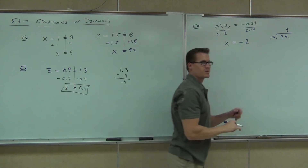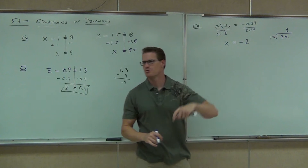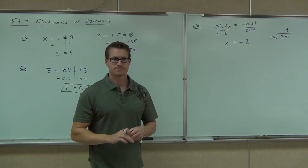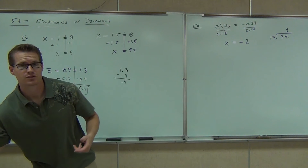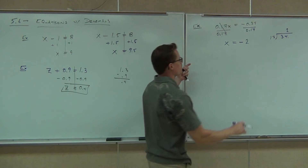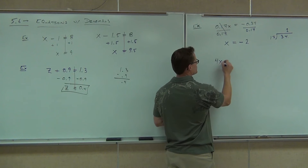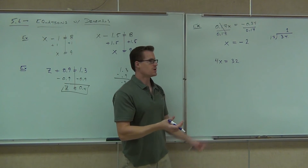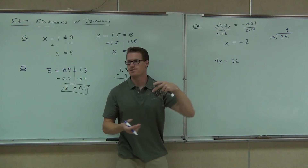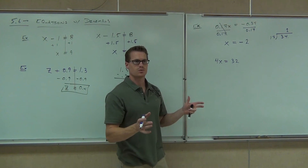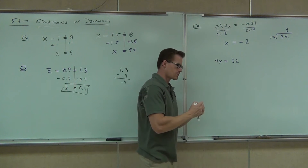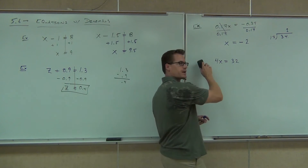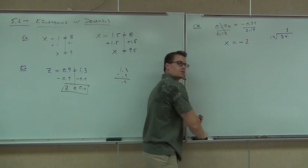It's kind of nice — we dealt with decimals and got a whole number answer. Because it's next to the x, it's multiplication, so you do the opposite. Just like if I gave you 4x equals 32, you'd divide by 4. Same exact idea — it's just now you have a decimal. You're just doing the inverse operation for any problem I give you, whether it has decimals or not.